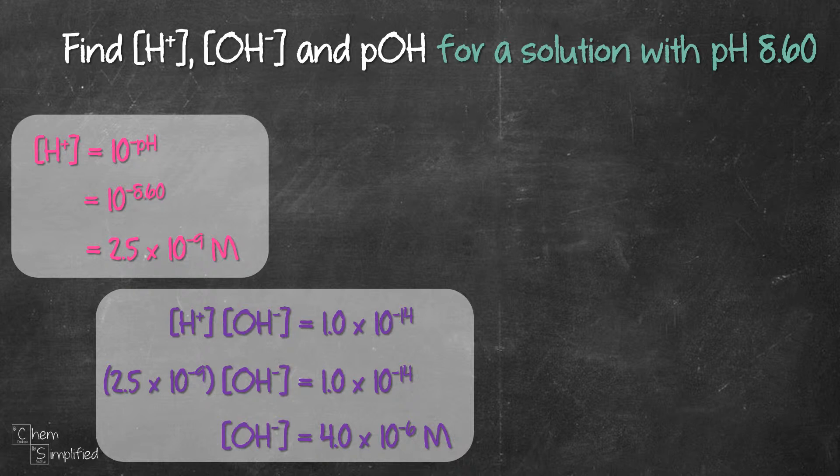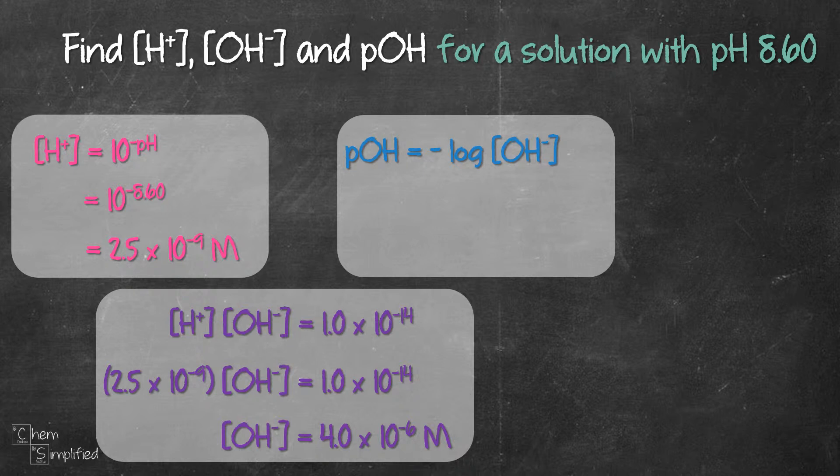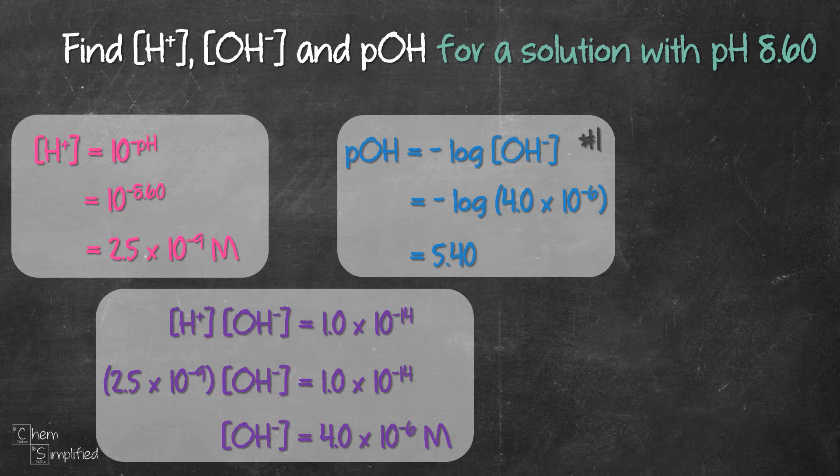Now that we found the value for OH-, we can use it to find pOH. We take the negative log of 4.0 × 10^(-6), and that gives us 5.40. Since there's no unit for pH and pOH, we'll just leave this number as is.